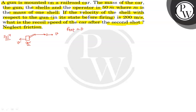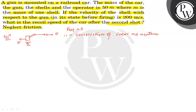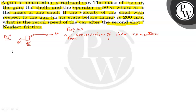Friction neglect कर दिया, यानि कि F external तो 0 हो गया। तो कौन सा law लगाएंगे? Conservation of linear momentum। Conservation of linear momentum से हम लोग इसको कर सकते हैं, क्योंकि F external 0 है। तो let the speed of the car be V।